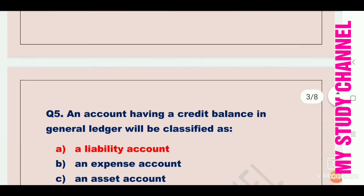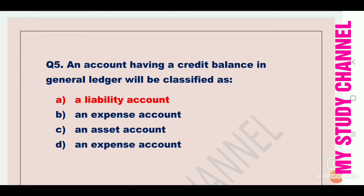Next question: an account having a credit balance in general ledger will be classified as. Option A is a liability account, B is an expense account, C is an asset account, and D is an expense account. Option A is the right answer, that is a liability account. An account having a credit balance in general ledger will be classified as a liability account.